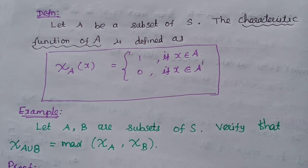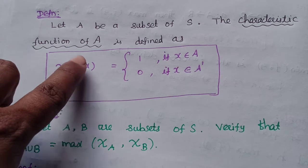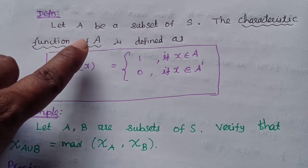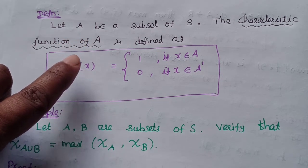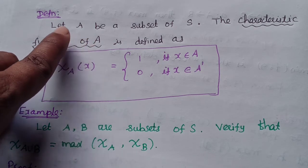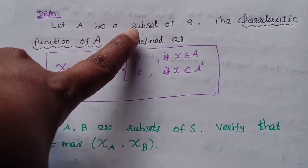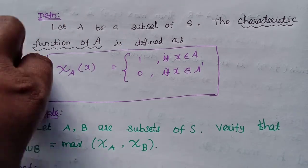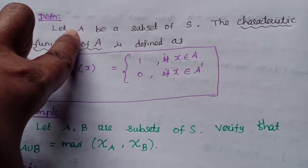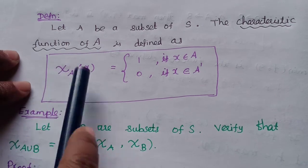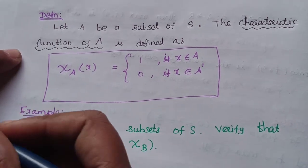The real analysis is the characteristic function. The characteristic function is defined as a subset. Let the universal set be defined, and let A be a subset of S. The characteristic function of A is defined as a function from S.